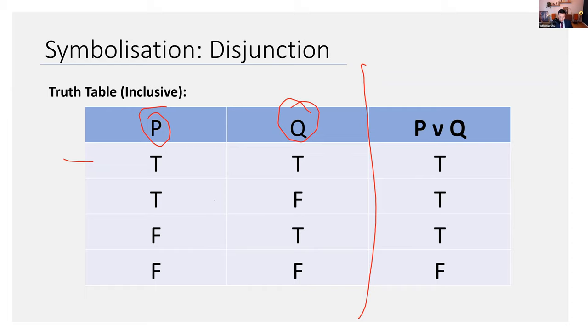How do we read this table? We read it from row to row. What this is saying here is, under the situation where P is true and Q is true, what can we say about P disjunction Q? Given that this is the inclusive sense, then if P is true and Q is true, we say that P or Q is also true. Next row, if P is true and Q is false, if we have only the soup but not the salad, then P disjunction Q is also true.